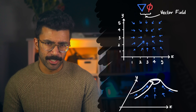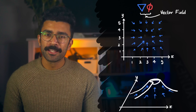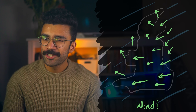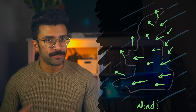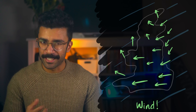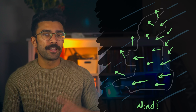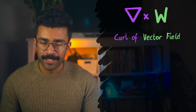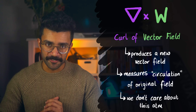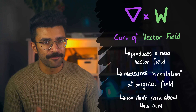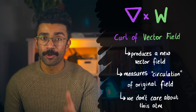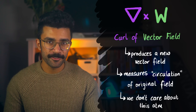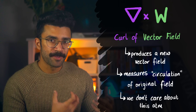But a vector field doesn't have to be a gradient — a vector field could also be its own thing. Like, for example, those wind field maps that we see whenever we watch the weather report on TV. These show the speed and direction of wind at each point on the map. And then there's even an operator that we can apply to a vector field to find out something about it. It's called curl, and it basically tells us the circulation of the vector field. Check out my video linked in the description if you want to know what curl does. But for now, we just need to know that there is an operator called curl, which we can apply to vector fields to find something out about them.